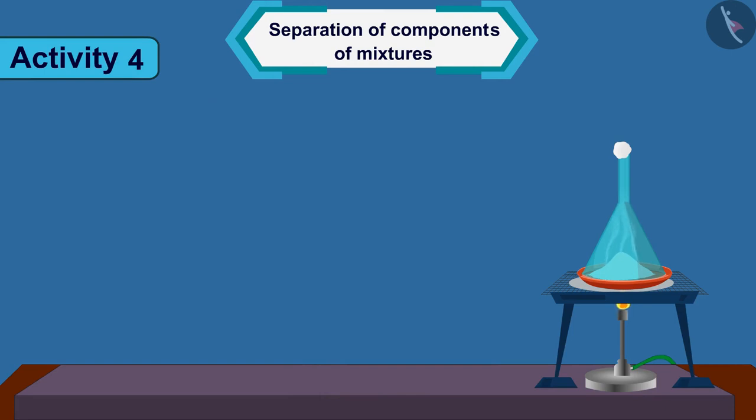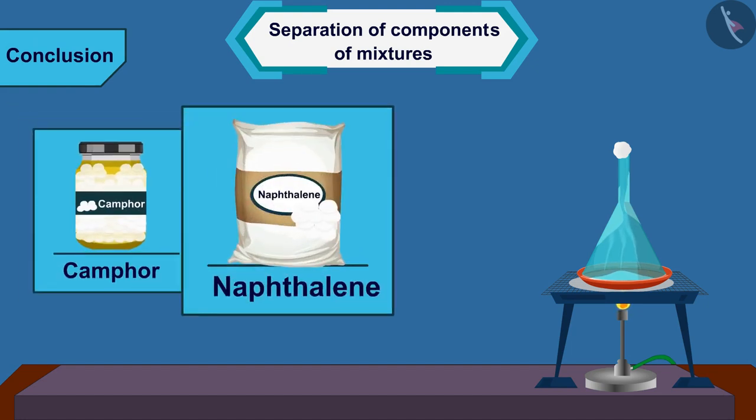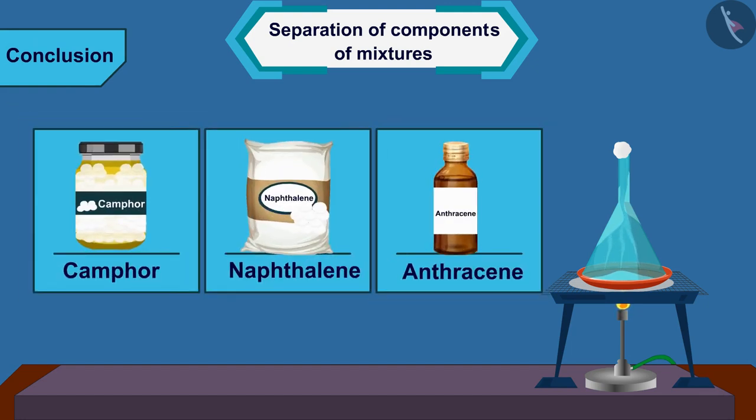By this activity, we can conclude that to separate mixtures that contain a sublimable volatile component from a non-sublimable impurity such as camphor, naphthalene and anthracene, the sublimation process is used.